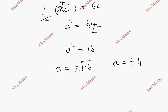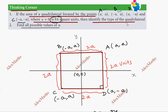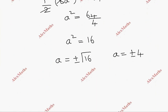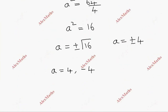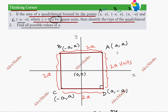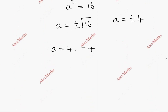So the answer to the question — find all possible values of a — is: a equals 4 or a equals minus 4. If we take the positive value, a equals 4, and the negative value gives a equals minus 4. So both possible values of a are plus 4 and minus 4.